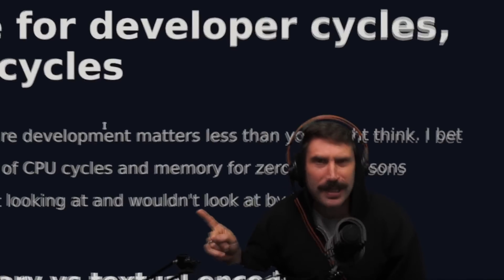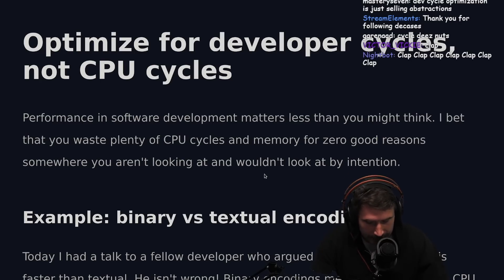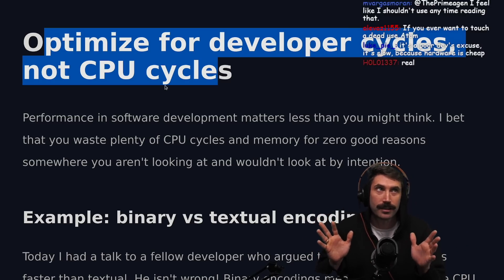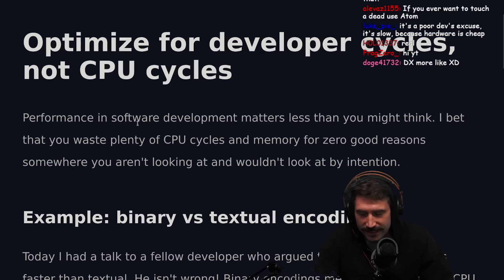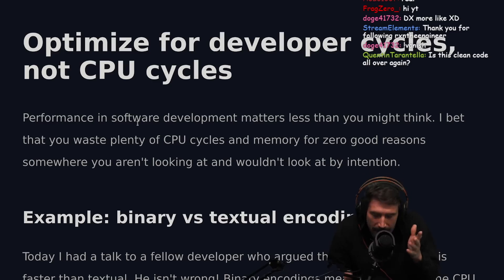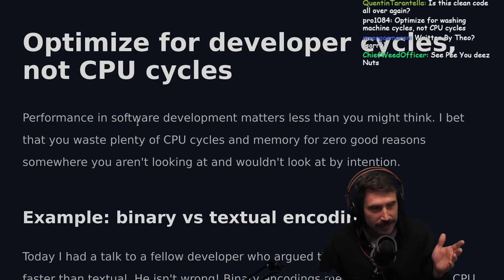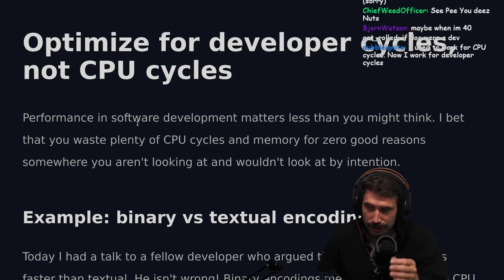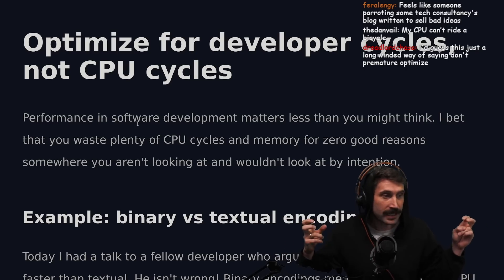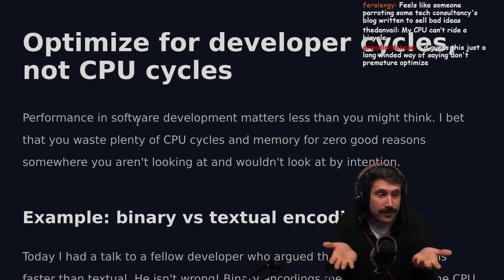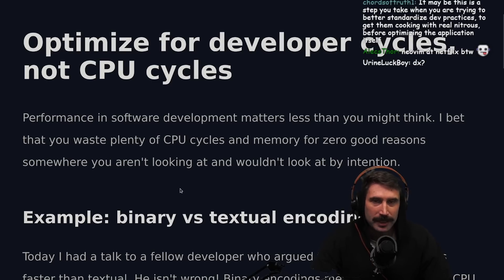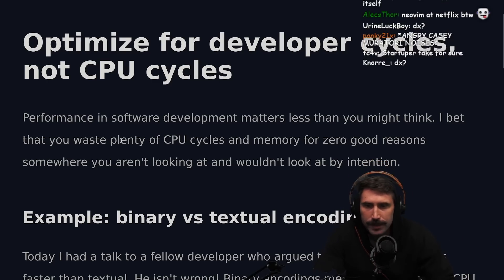Optimizing for developer cycles, not CPU cycles. Don't forget that Ahrefs saved 400 million dollars over three years by optimizing for CPU cycles — so maybe there is a time to think about CPU cycles. A buddy I was working with at Netflix said the most astute observation about modern DX: if you feel it's better, then it's better. That's how we define modern DX — if it feels better, it's probably better developer experience.